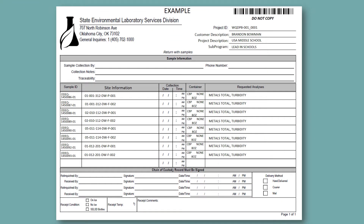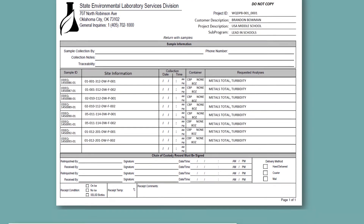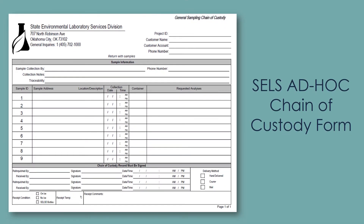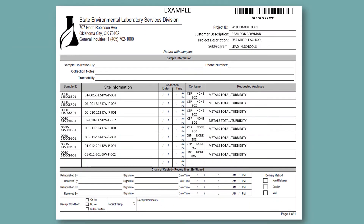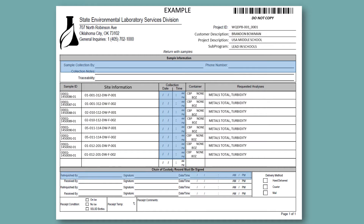The chain of custody you received in your sample kit is very specific to your LWSC sampling project. This is not like a typical chain of custody used by DEQ customers where the form is blank. There will already be sections completed in order to make the sampling process more streamlined and easier for you. The individual who will be collecting the samples will be the one required to fill in the remainder of the chain of custody.